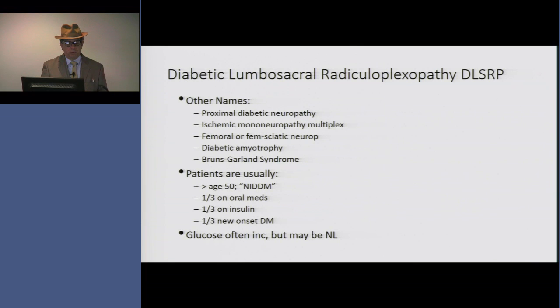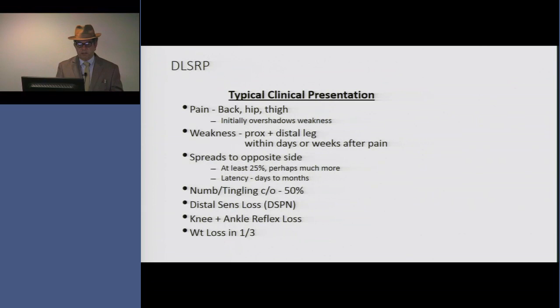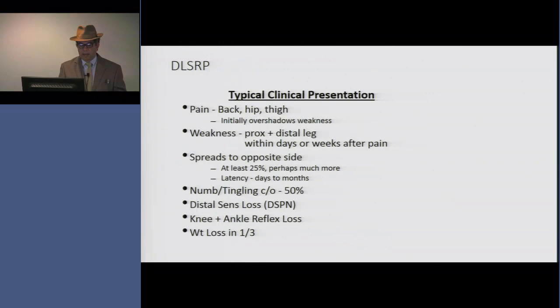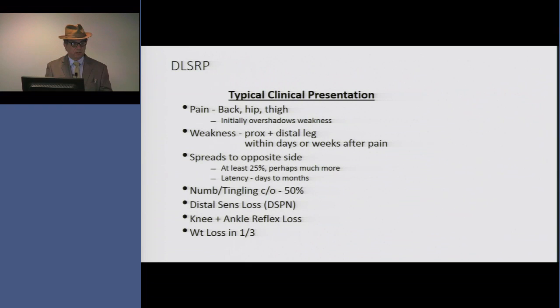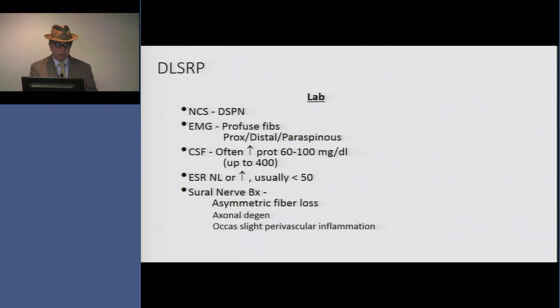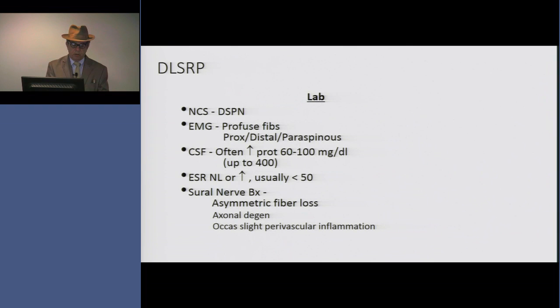The typical presentation is back pain and thigh pain that can overshadow the weakness. The weakness is both proximal and distal and occurs over days or weeks. It begins in one leg and can stay there, but at times spreads to the other. The patient may or may not notice new sensory symptoms because many have underlying diabetic distal sensory neuropathy. Usually ankle and knee reflexes are lost. A third of patients lose significant weight — the reason is unknown, whether from muscle atrophy, not eating due to pain, or some hypermetabolic condition. Nerve conductions show low amplitudes in an axonal pattern, EMG shows diffuse fibrillations proximally and distally, the CSF protein can be elevated, and the sed rate can occasionally be elevated.